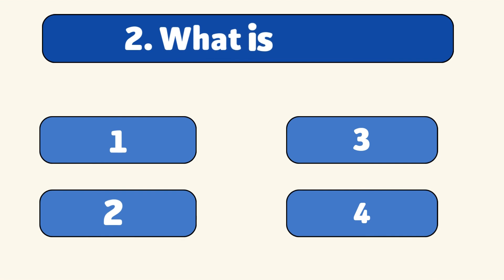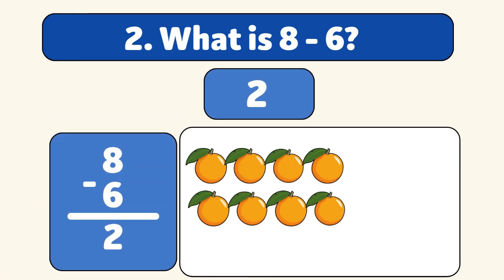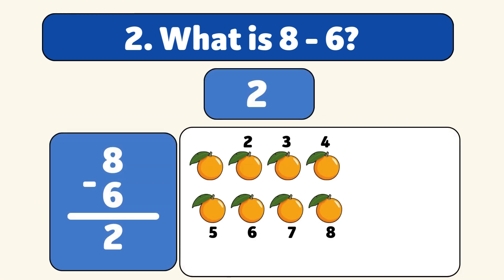What is eight minus six? The answer is two. We start with eight oranges and take away six. Let's count: one, two, three, four, five, six. You're doing amazing.